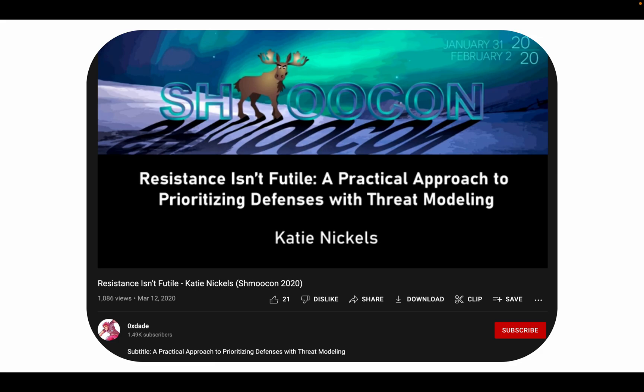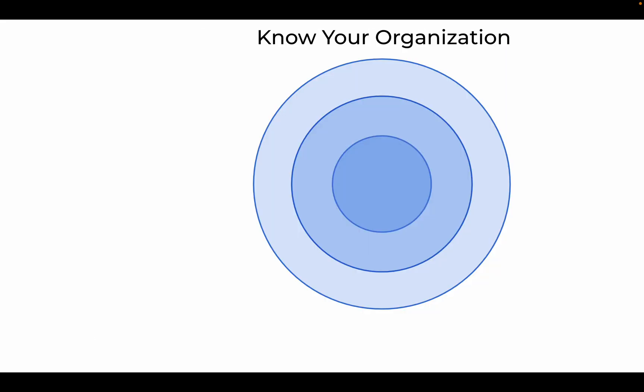The single best summary of the threat modeling approach advanced by Control Compass is laid out in Katie Nichols' 2020 Shmoocon talk. If you're interested in getting started with cyber threat modeling, you should absolutely check out that presentation. A key first step in building a cyber risk model involves getting to know your organization itself — a step that is often understandably overlooked when risk modeling is led by threat intelligence teams who tend to focus on identifying all cyber threats in the modern landscape.